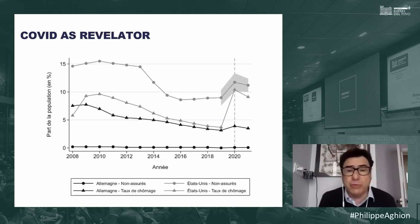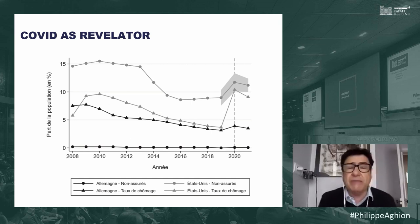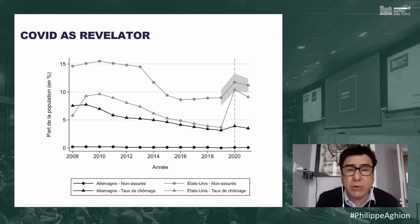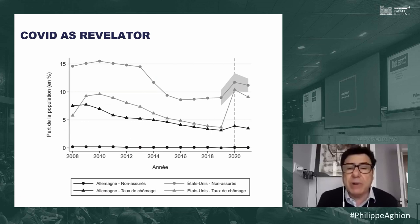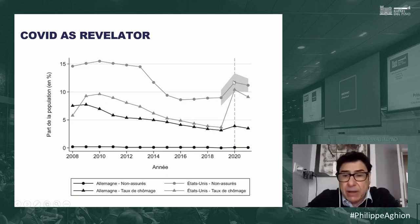From the conclusion of the book, we look at the fraction of individuals without health insurance. The black curves are Germany, the gray curves are the US. Unemployment went up a lot during COVID in the US, and when you lose employment in the US there is a probability of losing access to health insurance. The fraction of people without health insurance had gone down thanks to Obamacare, but went up during COVID — exactly when people needed it most. In Germany, everybody has health insurance throughout.